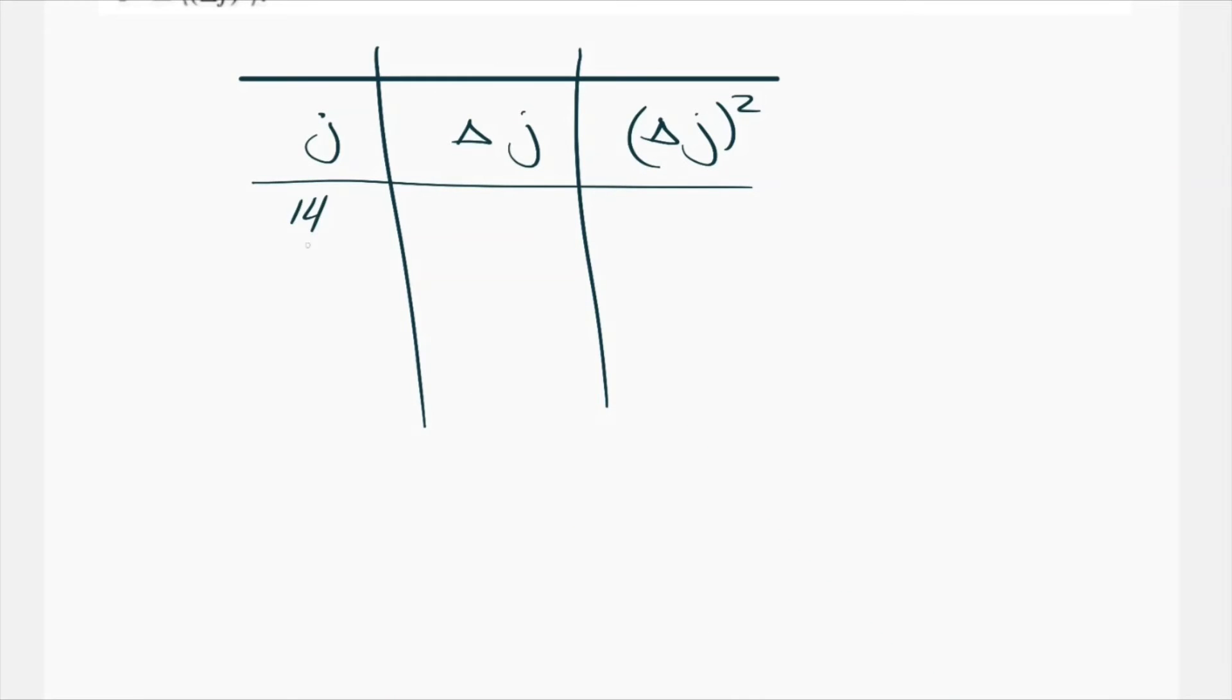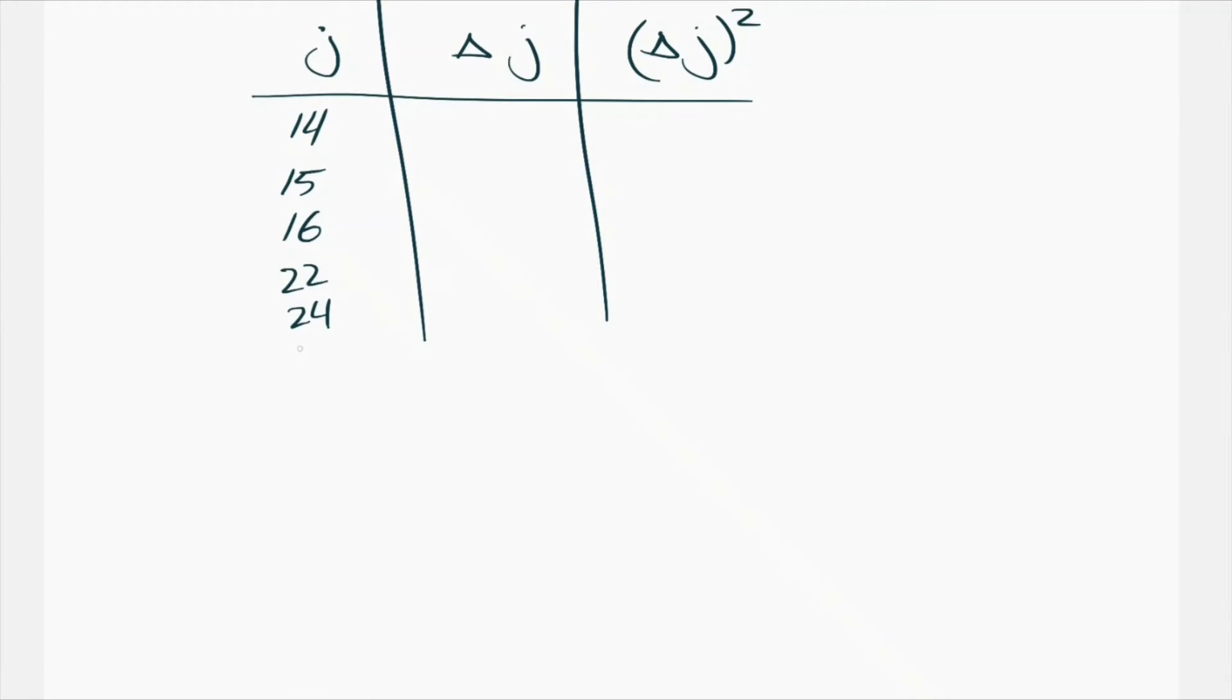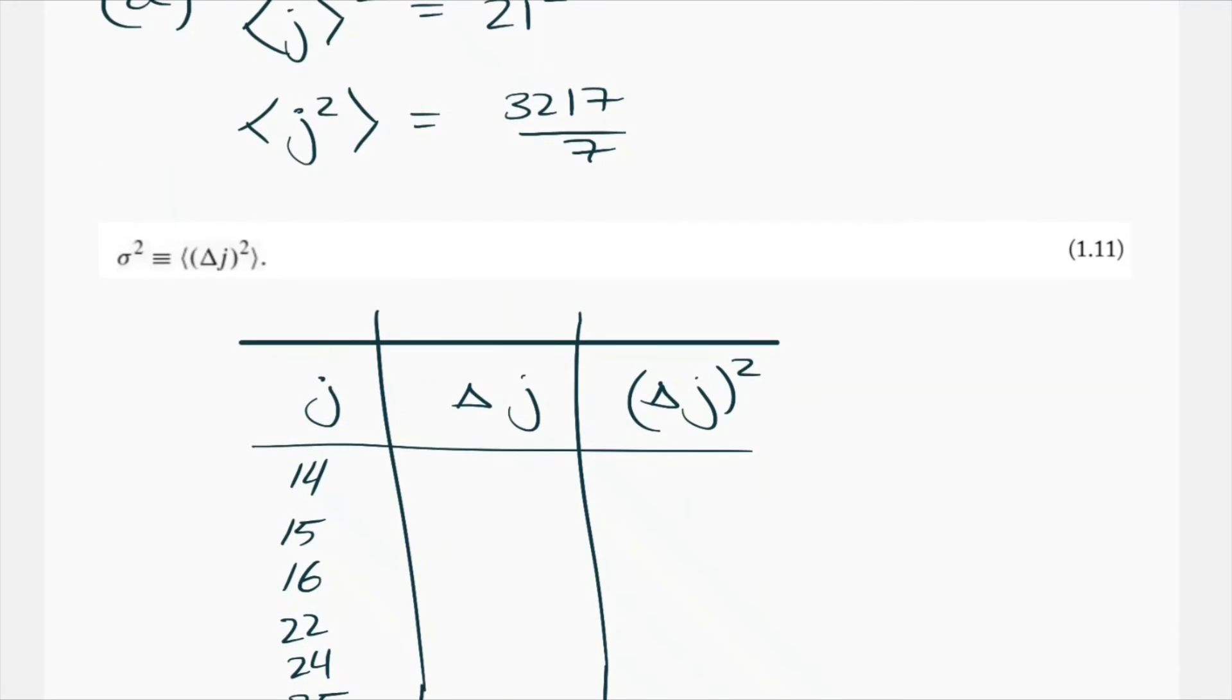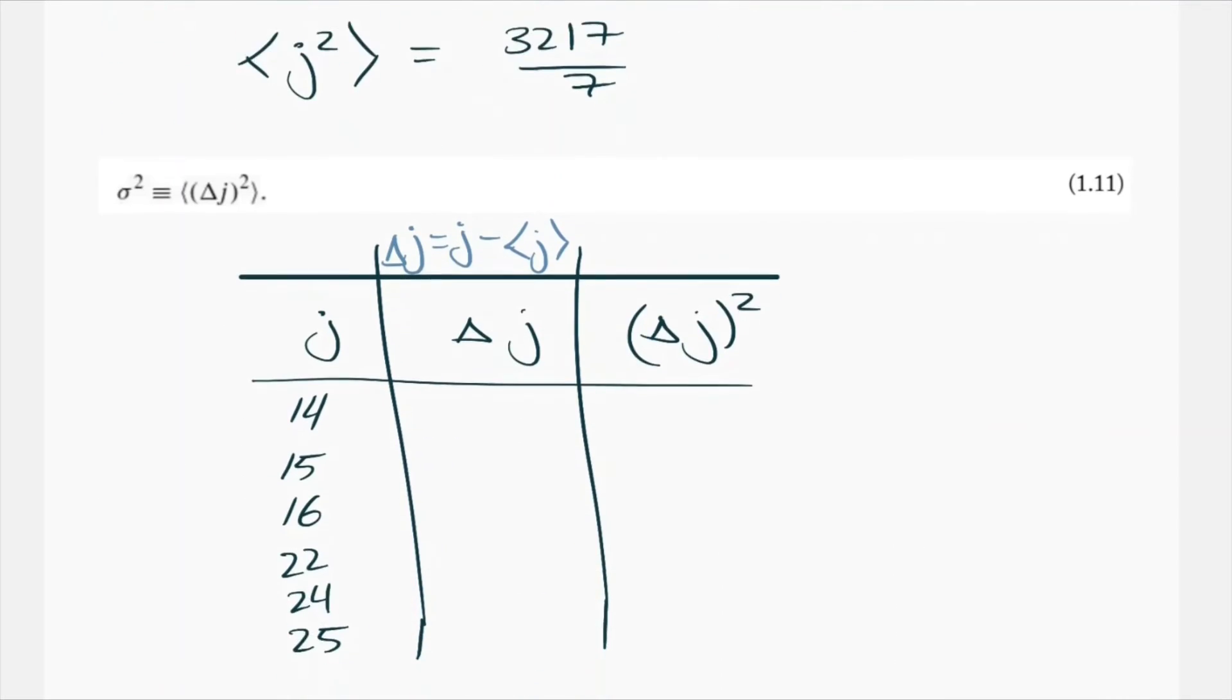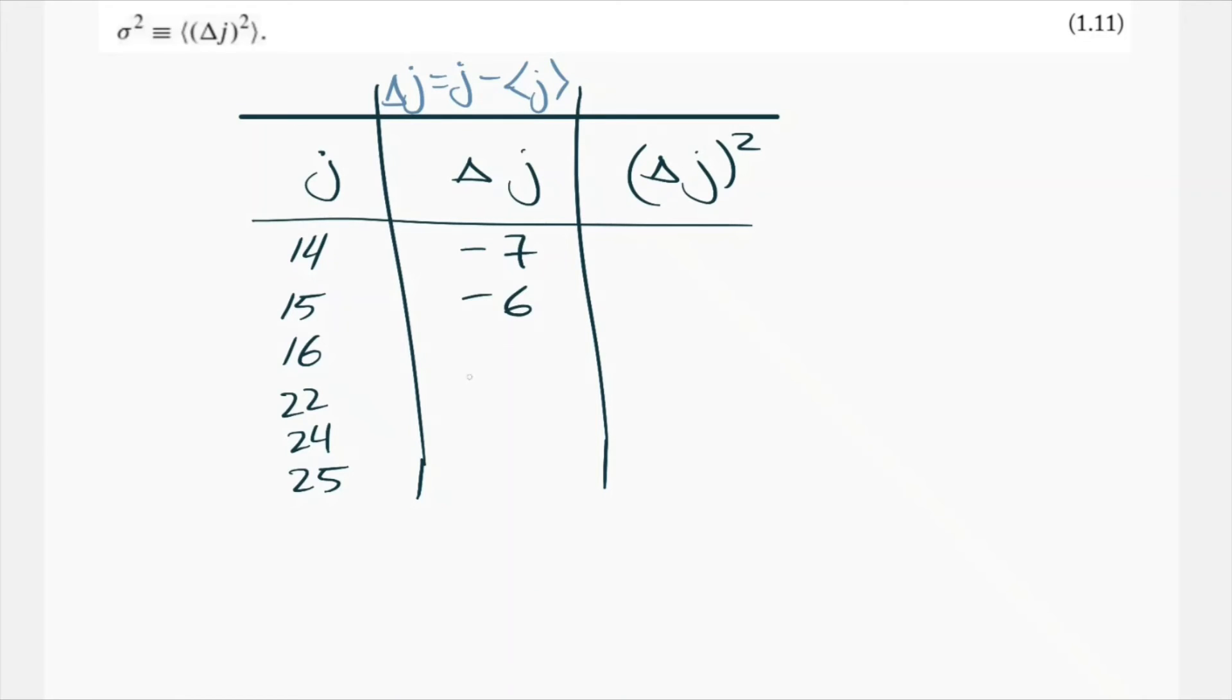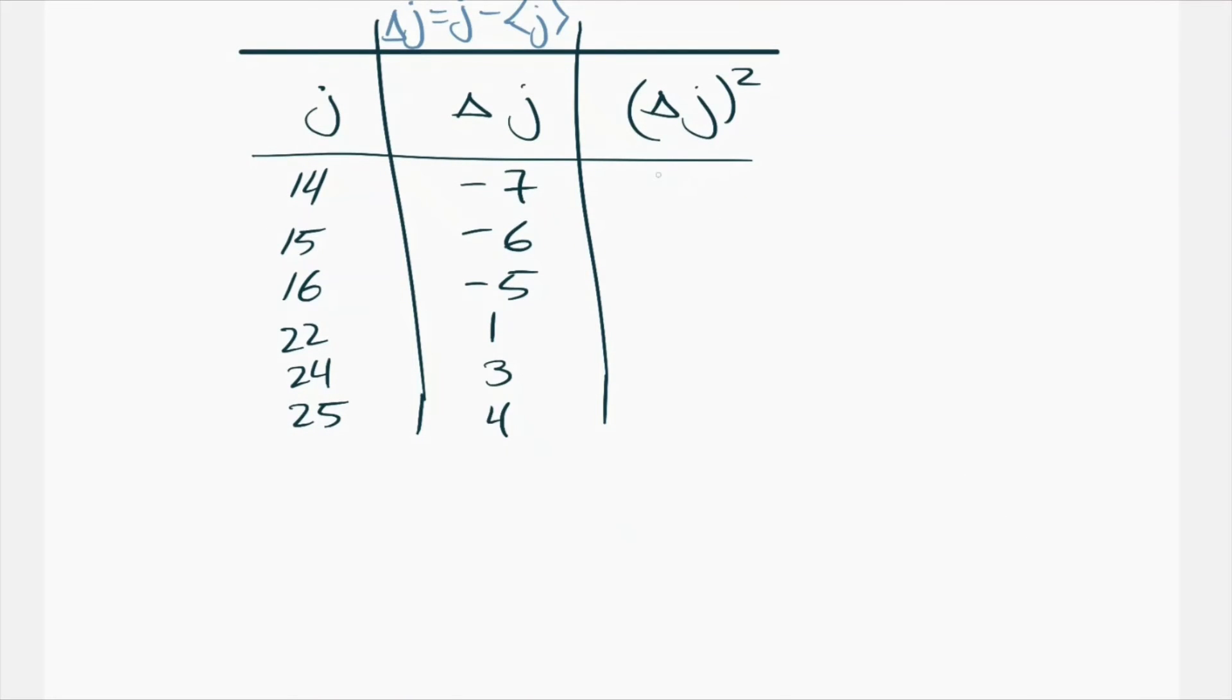So we got our little table here: 14, 15, 16. These are the ages from the histogram, 22, 24, 25. Everything else doesn't matter. Everything else was zero. For this part, we want to keep in mind when we're calculating delta j, delta j is just j minus expectation value of j. We already know what that is. That's 21. So 14 minus 21 is negative seven, negative six. We're going to get negative five, one, three, and four. Now square all of these for this third column: 49, 36, 25, one, nine, 16.